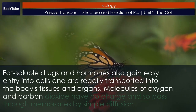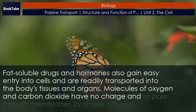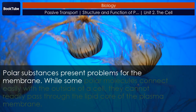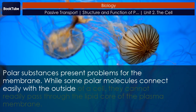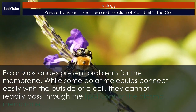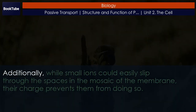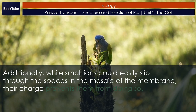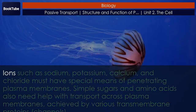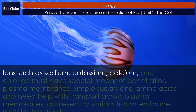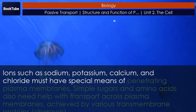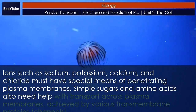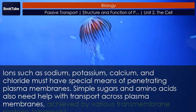Molecules of oxygen and carbon dioxide have no charge and so pass through membranes by simple diffusion. Polar substances present problems for the membrane. While some polar molecules connect easily with the outside of a cell, they cannot readily pass through the lipid core of the plasma membrane. Additionally, while small ions could easily slip through the spaces in the mosaic of the membrane, their charge prevents them from doing so. Ions such as sodium, potassium, calcium, and chloride must have special means of penetrating plasma membranes. Simple sugars and amino acids also need help with transport across plasma membranes, achieved by various transmembrane proteins.